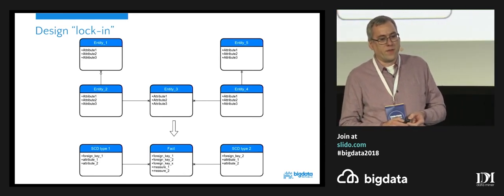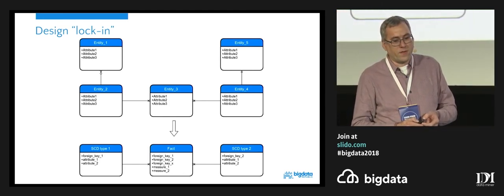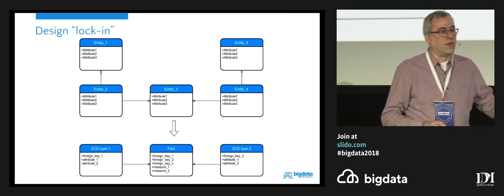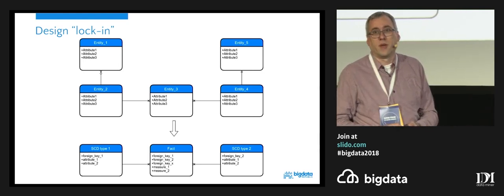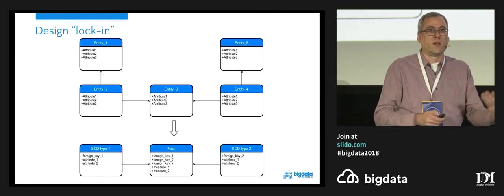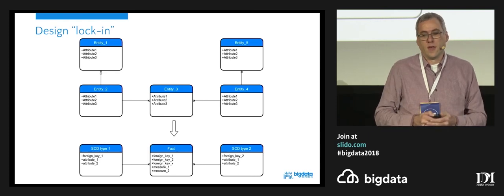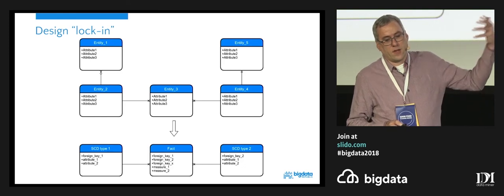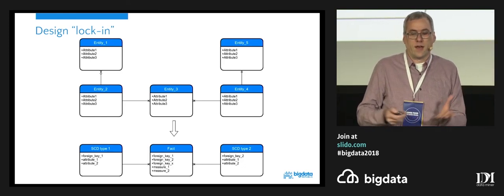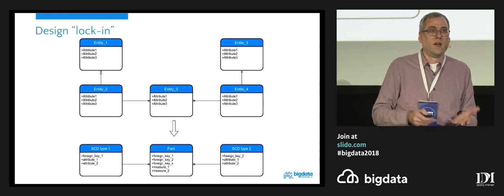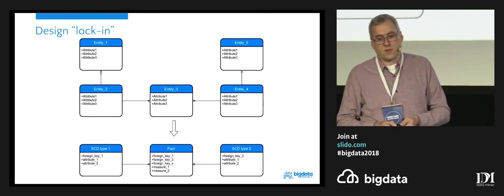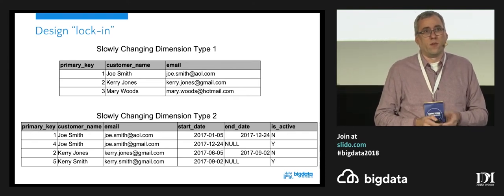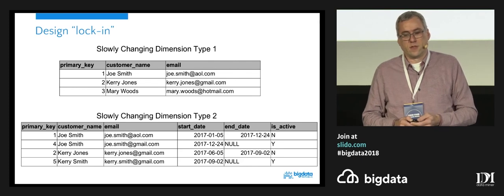One of the things you see in data warehouses is that there is a very direct transformation from your source systems. Here we see a simple OLTP system, which can be transaction-based, which gets transformed rather immediately to facts and dimensions. Because of the way the source system is set up, it can have a direct effect on the way your data warehouse is structured. One of the things about locking is when you look at methodologies like Kimball.